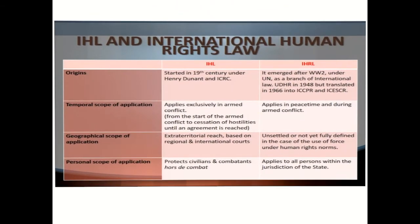Now let us compare international humanitarian law and international human rights law. In terms of origins, international humanitarian law started in the 19th century under Henry Dunant and the ICRC. Human rights law emerged after World War II under the United Nations as a branch of international law. The UDHR was created in 1948 but translated in 1966 into two covenants: the International Covenant on Civil and Political Rights and the International Covenant on Economic, Social, and Cultural Rights, and other treaties that followed.